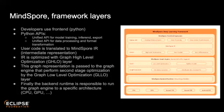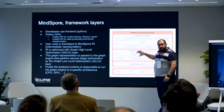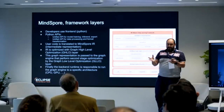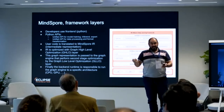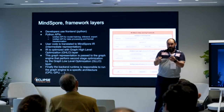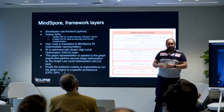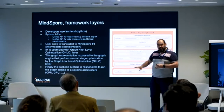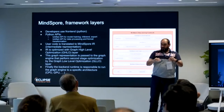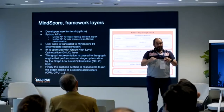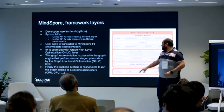This Python code is not directly executed by MindSpore. First, MindSpore takes your code and translates it into an intermediate representation, or IR. When MindSpore does that, it transforms your code to include optimizations — not yet related to hardware, but really an optimization of your code based on the graph.